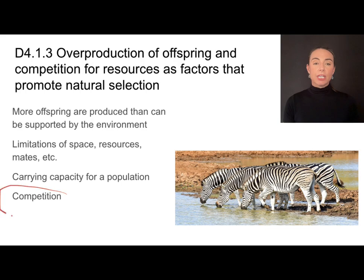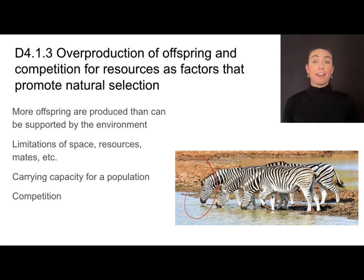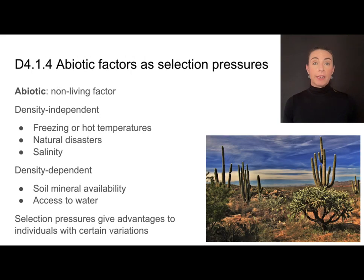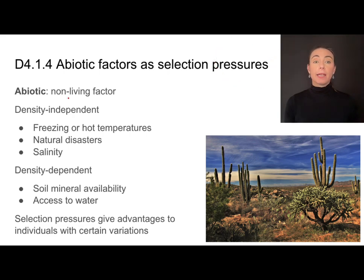Competition is a very important factor for natural selection because it sets up some individuals to be more fit for their environment than others in the population. In an organism's environment, there are several abiotic factors that act as selection pressures — things that are driving natural selection. Abiotic means non-living, and these factors can be classified as either density-independent or density-dependent.